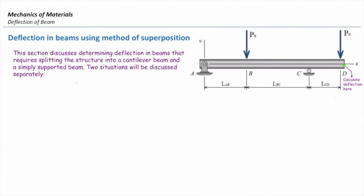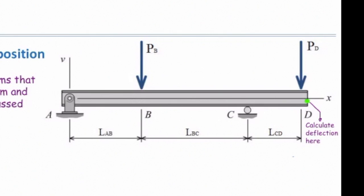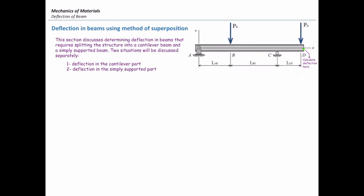This section discusses how to determine deflection in beams that requires splitting the structure into a cantilever beam and a simply supported beam. We will talk about two different situations: how to calculate deflection on a cantilever beam, like the point shown on the right part, or how to calculate deflection in the simply supported beam somewhere between A and C. To understand the concept better, let's solve a problem.